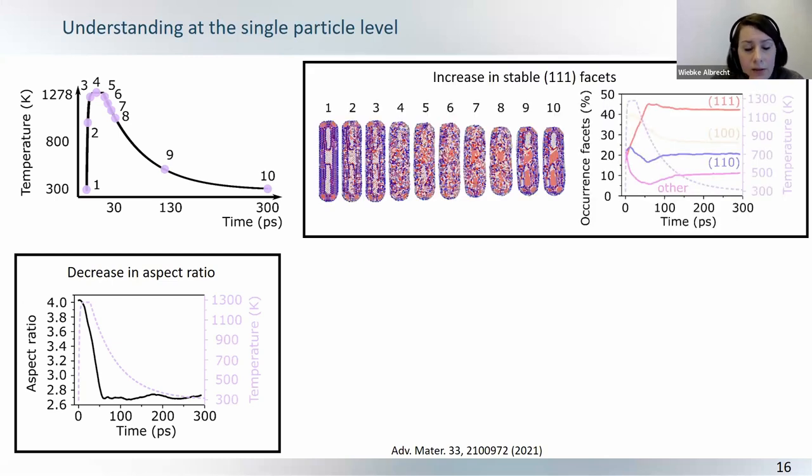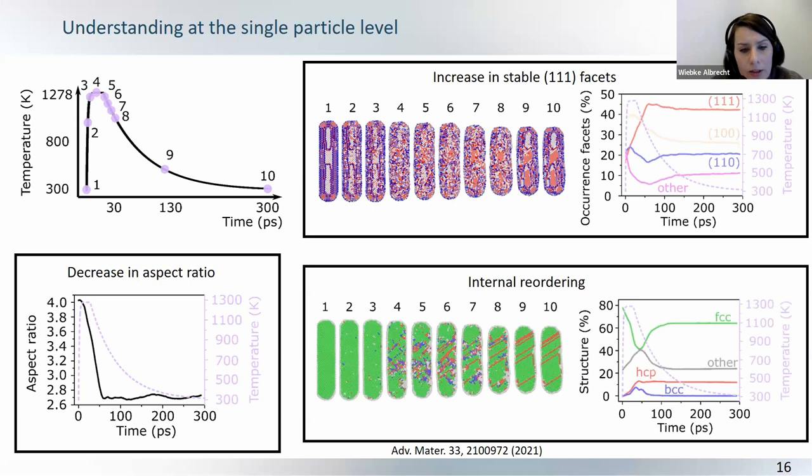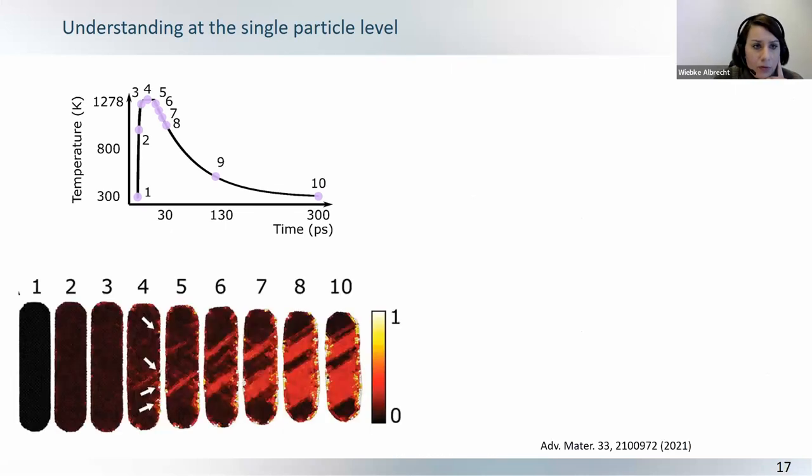So, then you can see the evolution of surface facets towards the more stable 111 facets, where the whole surface basically starts to restructure. And if you look inside the nanoparticle, we see that indeed the single crystalline FCC starts to get disordered around the maximum of the heating pulse. And then disordered over time turns into these twinning defects, and the twinning planes actually get pushed away.